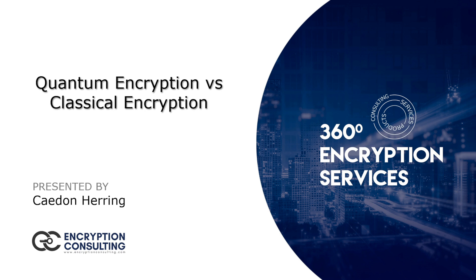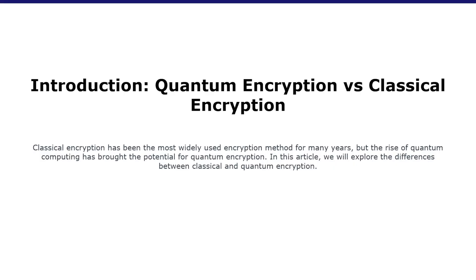Today we're going to be looking at quantum encryption versus classical encryption. In today's digital age, data protection is essential. With the increase in cyberattacks, it's become necessary to secure confidential information from unauthorized access as much as possible. Encryption is the process of encoding information in such a way that only authorized parties can access it. Classical encryption has been the most widely used encryption method for many years, but the rise in quantum computing has brought the potential for quantum encryption.